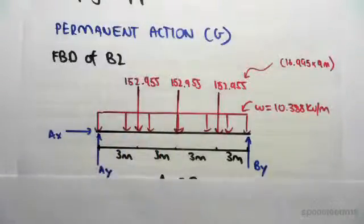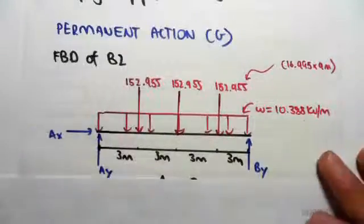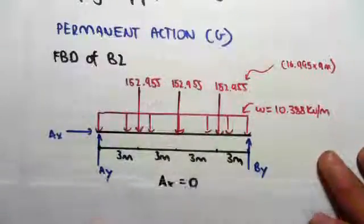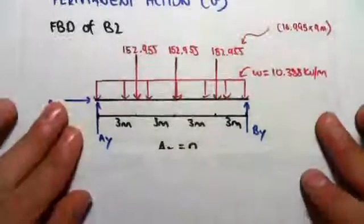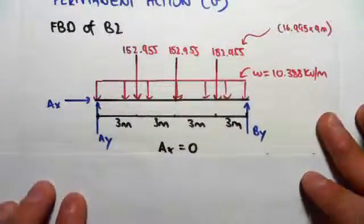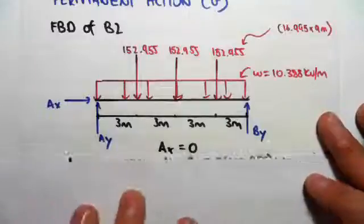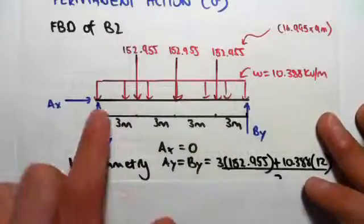So now we can look at the free body diagram of this and solve for the reactions. Obviously Ax is just going to equal zero because there is no horizontal force at all anywhere, and because this problem is symmetrical we don't have to go and find moments about a point.